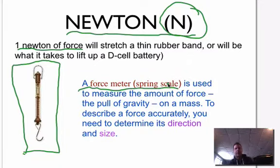It's used to measure the amount of force on an object, or to measure the pull of gravity on a mass. When we say a mass, we don't want to confuse mass with force or with weight, because mass is talking about the number of particles in a particular object and the amount of matter in it.